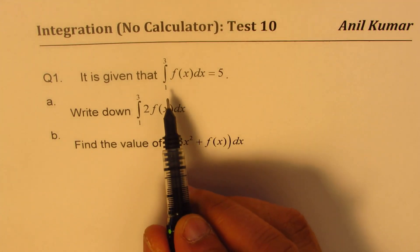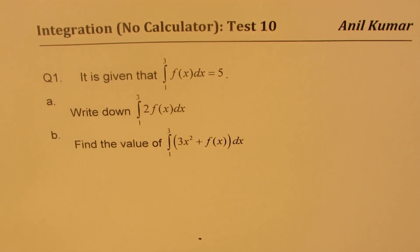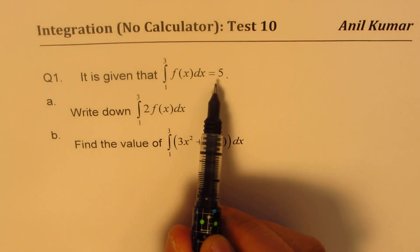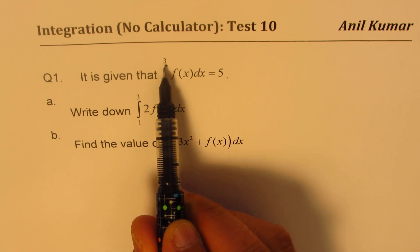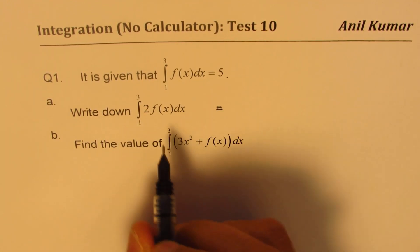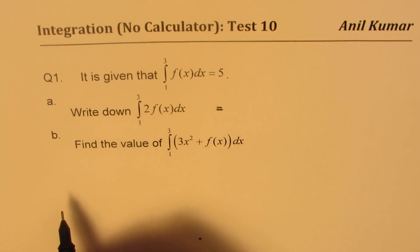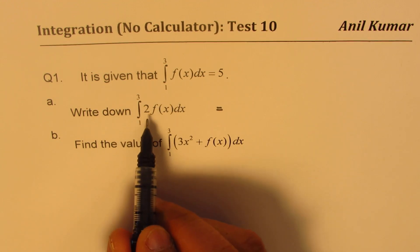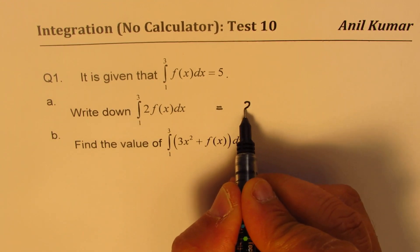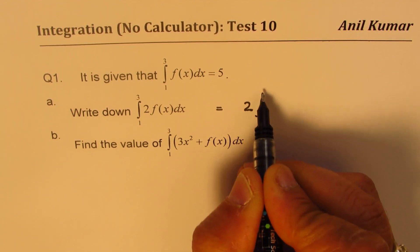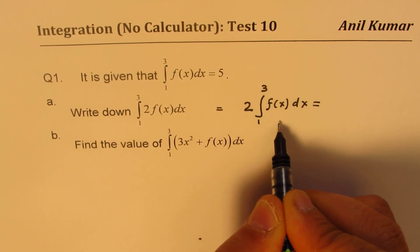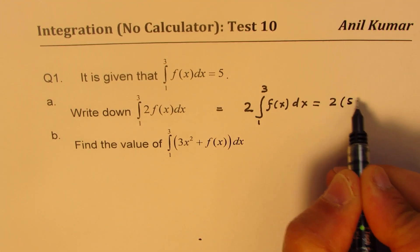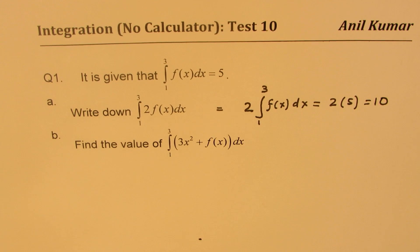Every definite integral will lead to a number as a solution. We are already given the number 5 representing this definite integral where the lower bound is 1 and the upper is 3. Now we need to find what happens when we multiply this by 2. Applying the normal rules for definite integrals, 2 is a constant so everything gets multiplied by 2, giving us 2 times the definite integral from 1 to 3 of f(x) dx. This integral is given as 5, so it results in 2 times 5, which is 10. That is how you solve part A.